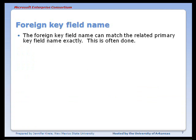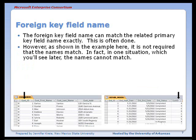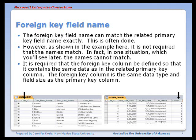The foreign key field name can match the related primary key field name exactly, and this is often done. However, in the example in this presentation, there's a slight difference: there's Cust_ID with an underscore, and Cust ID without an underscore. There is one situation where the primary key field name and the foreign key field name cannot match, but you'll find a mix in the real world — sometimes they match, sometimes they don't. It is required, however, that the foreign key column be defined in the same way the primary key column was defined: it has the same data type and the same field size, so they can hold the same data.